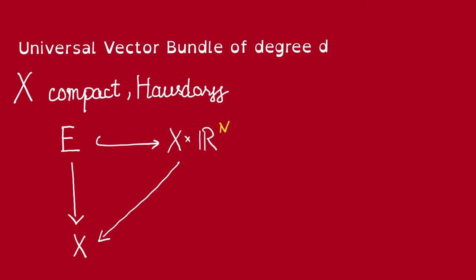Using that, we're going to show that every vector bundle over X of rank d is going to be the pullback of this canonical bundle on the d-Grassmannian of this R^n. To that end,